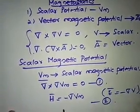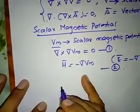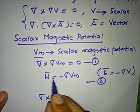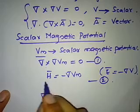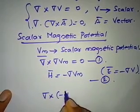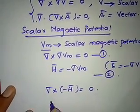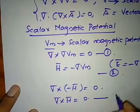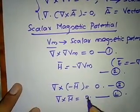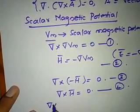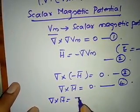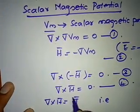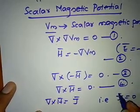Using equation 2 in equation 1, we can write del cross (del Vm) equals minus H-bar, which equals zero. This gives us del cross H-bar equals zero. But we know from the curl equation that del cross H-bar equals J-bar, so if del cross H-bar equals zero, then J-bar must equal zero.